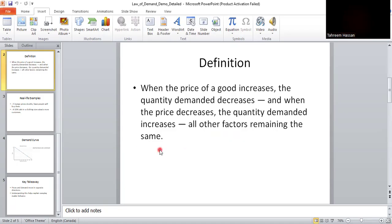All other factors remaining the same means this is true if all other things stay the same, for example, people's income, taste, or quality of the product.